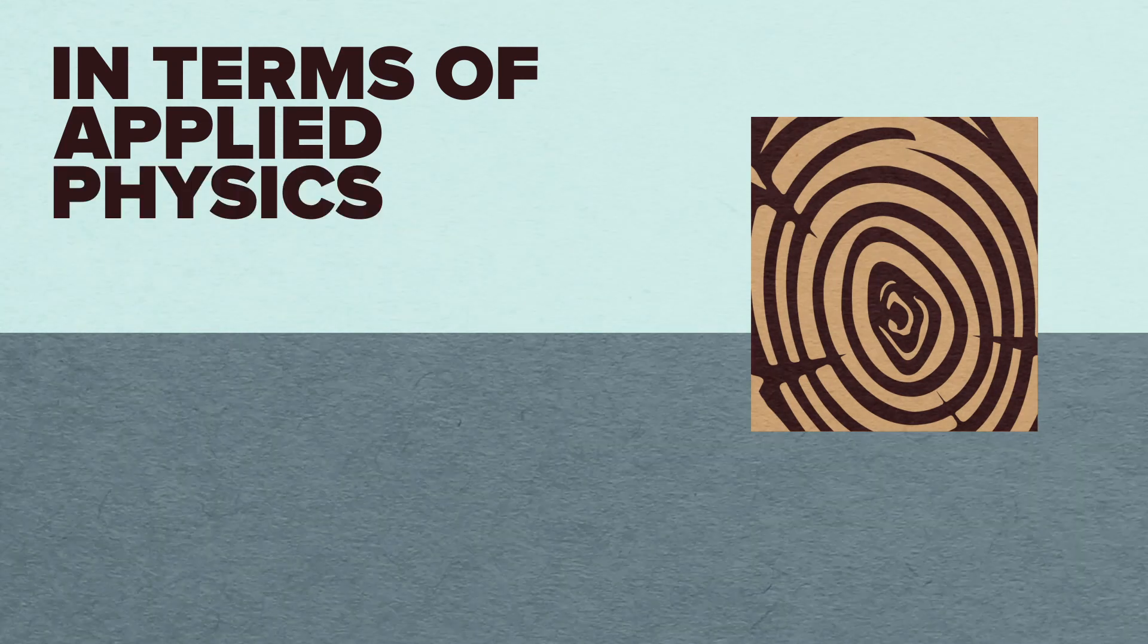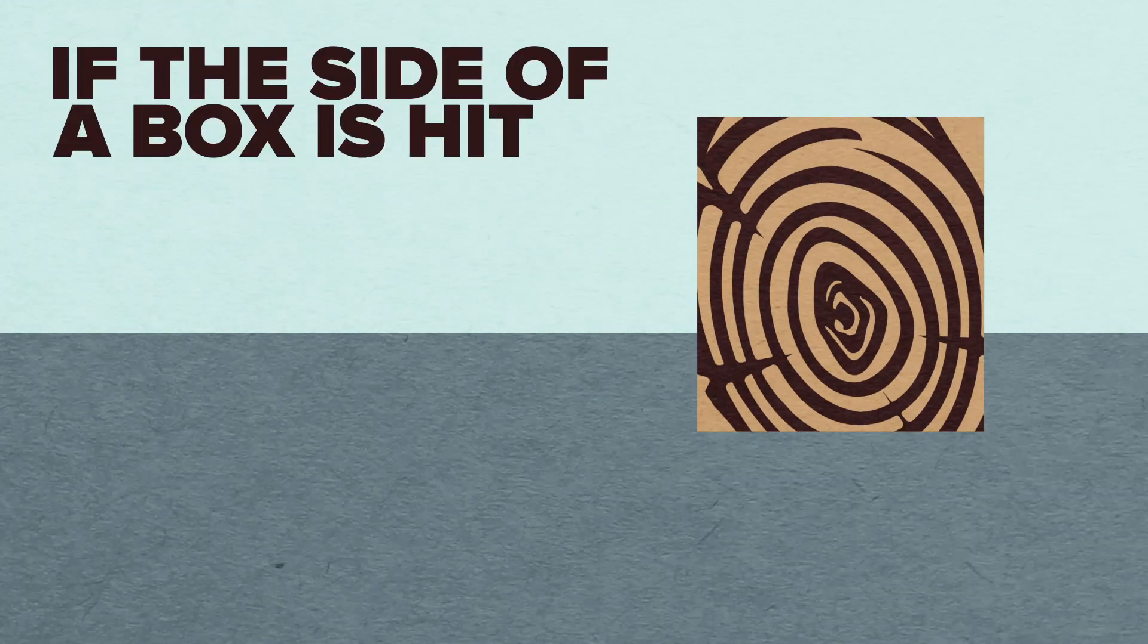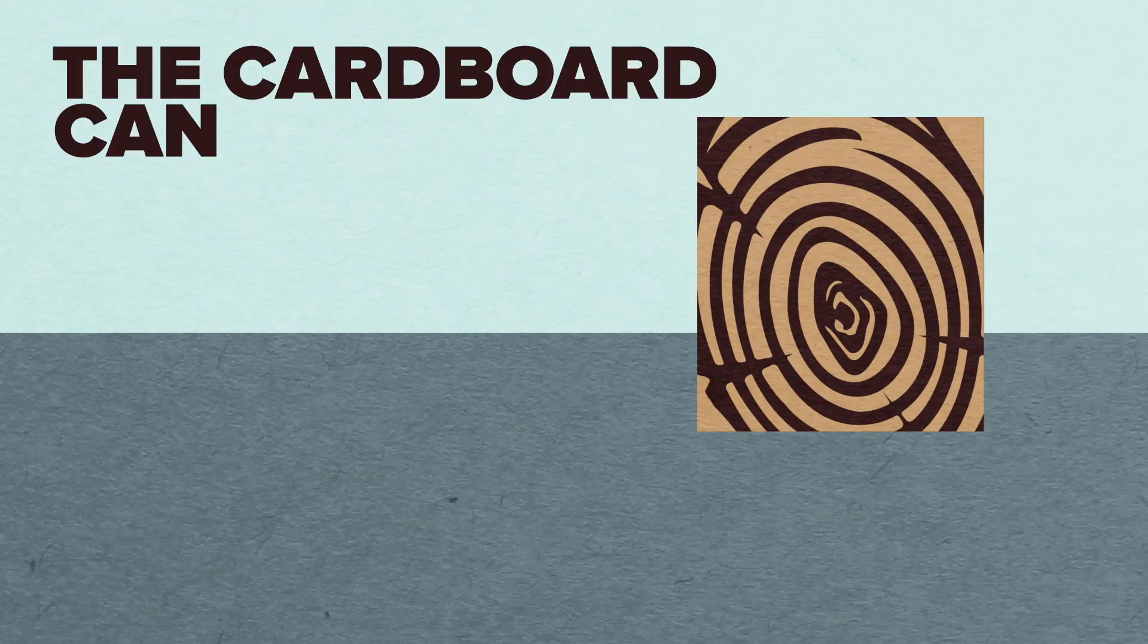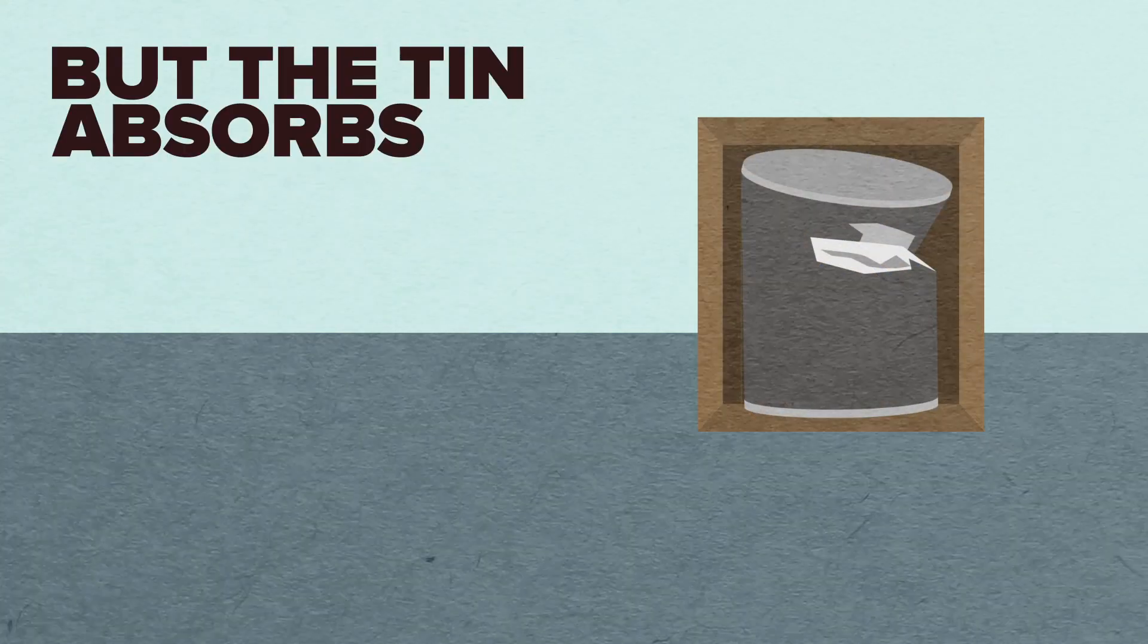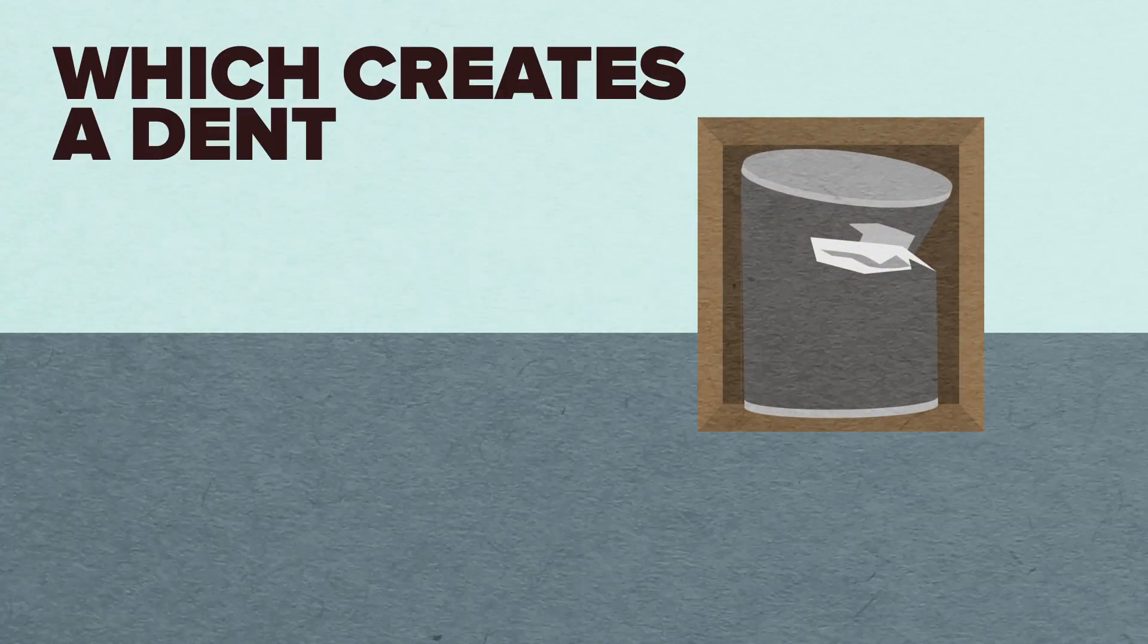In terms of applied physics, if the side of a box is hit, the cardboard can flex back but the tin absorbs the force, which creates a dent or crumple.